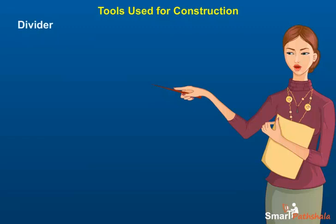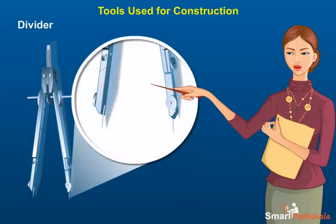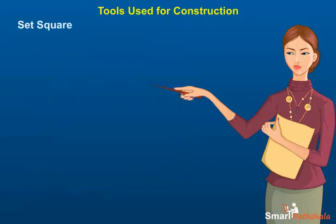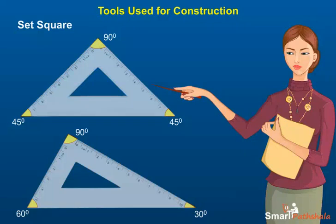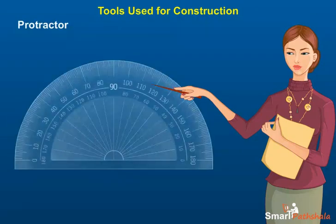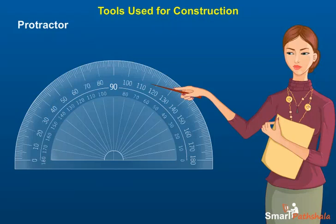3. Divider: It consists of a pair of pointers that is used to measure arcs or lengths. 4. Set Square: It is a right angle triangle that is used to draw lines that are perpendicular. 5. Protractor: It is a semi-circular instrument that has markings along the circular ends. It is used to measure and draw angles.